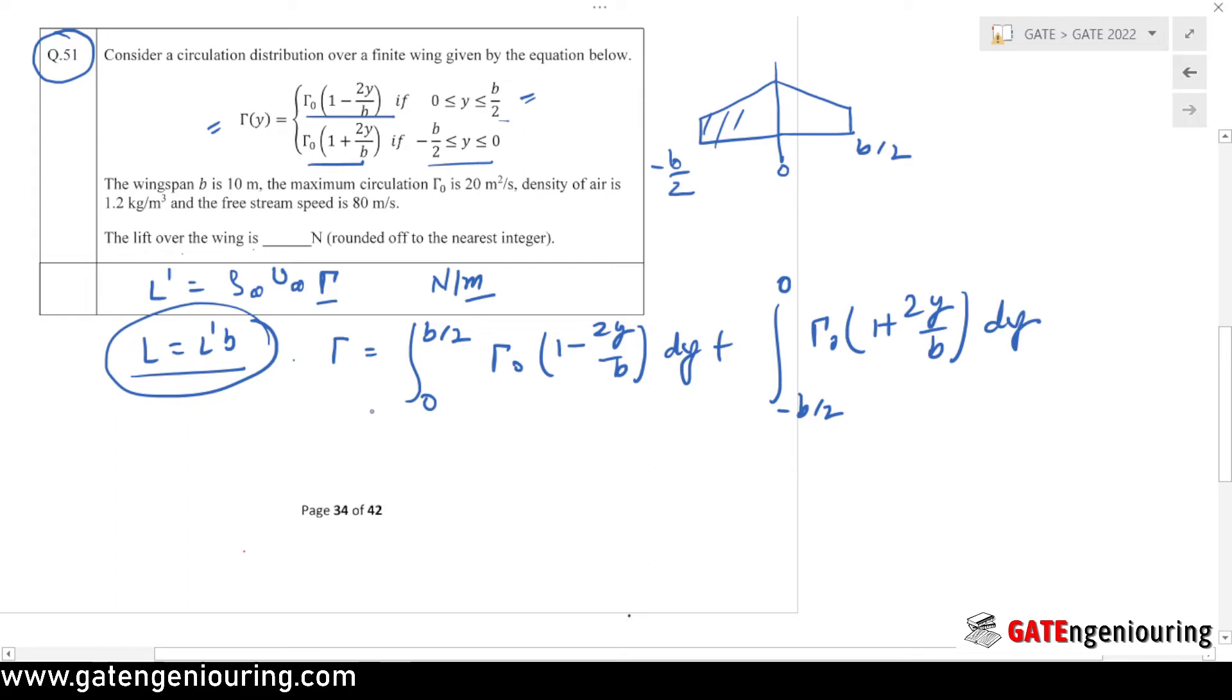We have to solve the integration, which is quite simple here. So Λ₀, and the integration of 1 is y, and integration of y is y²/2. So 2 into y²/2 into b gives me y²/b, and the limits are 0 to b/2.